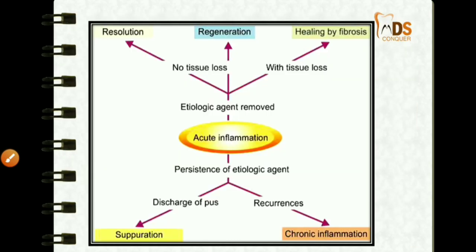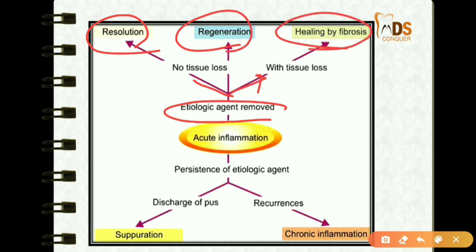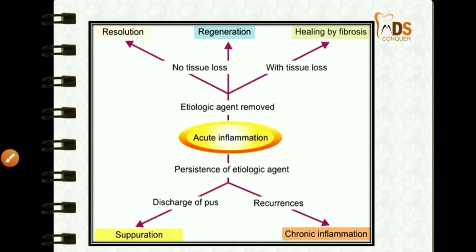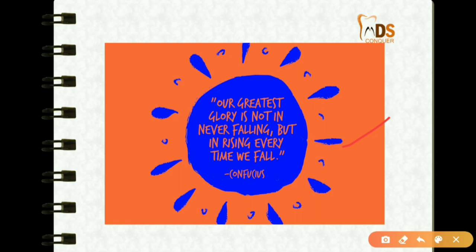The fate of acute inflammation: if the etiological agent is removed and there is no tissue loss, there will be resolution or regeneration. If there is tissue loss, it heals by fibrosis. If the etiological agent is not removed, there may be a discharge of pus leading to separation and recurrence of acute inflammation, which finally ends up as chronic inflammation. These are the important events for acute inflammation.